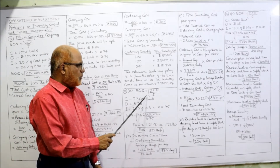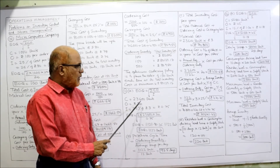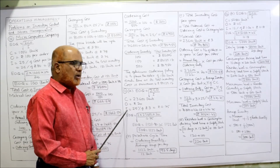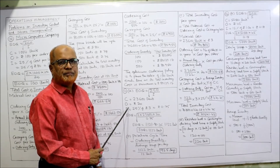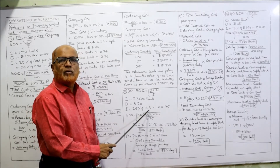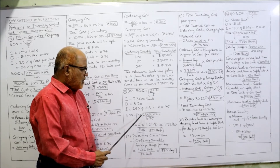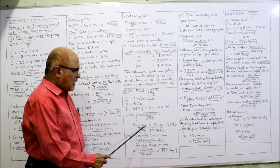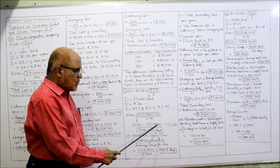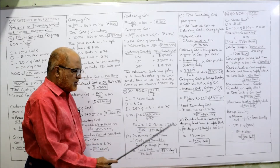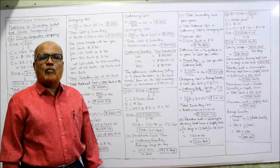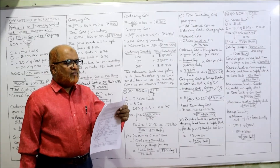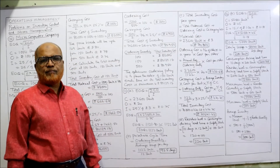EOQ calculation: C = 23,600 units, O = 20 rupees, I = 25% of 3 rupees = 0.75 rupees. EOQ = √(2 × 23,600 × 20 ÷ 0.75) = √1,256,000 ≈ 1,121.90 ≈ 1,122 units. So EOQ = 1,122 units.